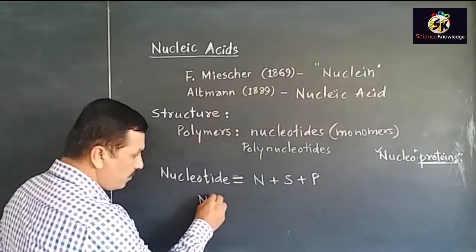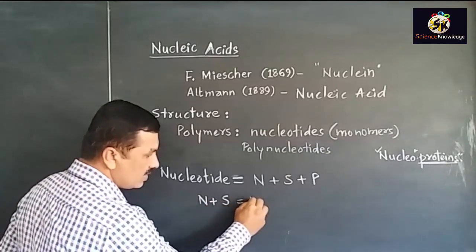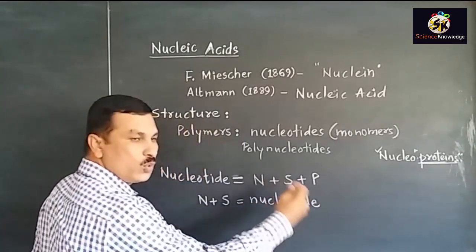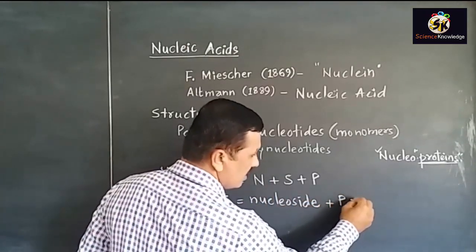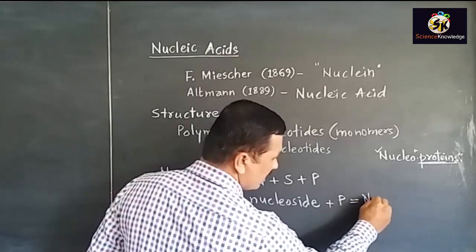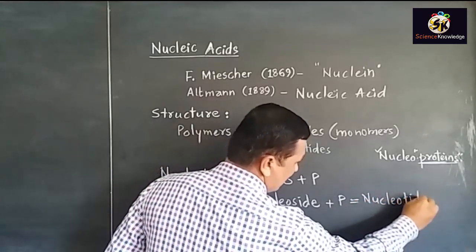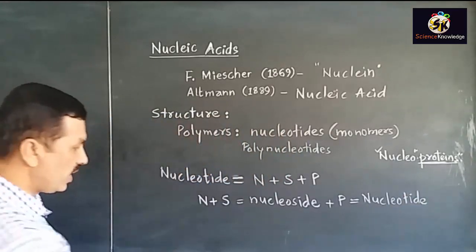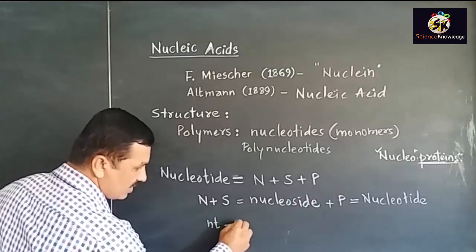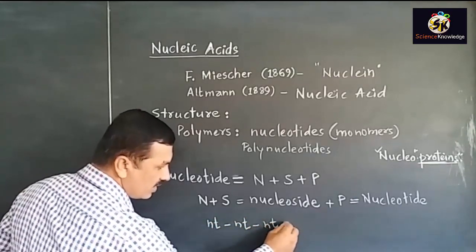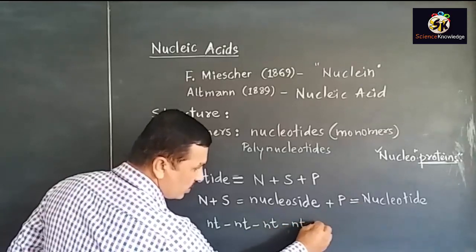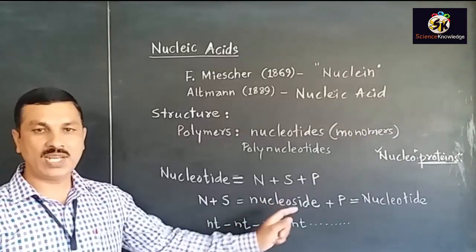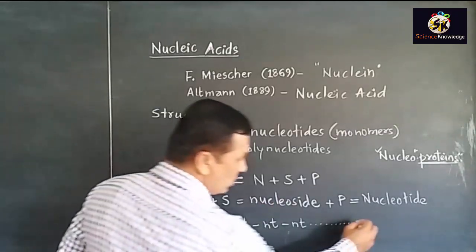Nitrogen base plus sugar molecule is called a Nucleoside, and Nucleoside plus Phosphorus becomes a Nucleotide. In the polymers, these Nucleotides are connected with each other. Nucleotide links with Nucleotide and the next Nucleotide and so on. This chain of many Nucleotides is called Nucleic Acid.